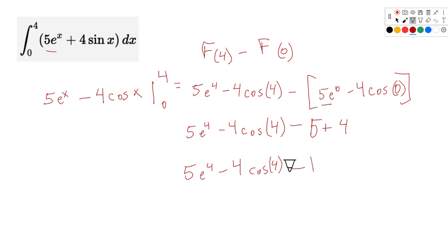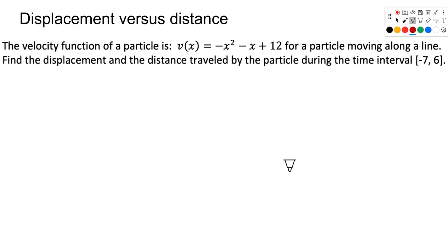That's the word I was looking for — displacement. Displacement is the total positive area minus the negative, so it's really the area under the curve using signed values. When looking for displacement, you just integrate and take the two endpoints. If you want the total distance traveled — in this case using a velocity function — traveling backwards would be negative distance and would get subtracted off.